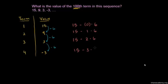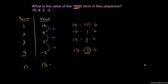The fourth term is 15 minus 3 times 6 — we're subtracting 6 three times. So the pattern is: for the nth term, the multiplier is n minus 1. When n is 4, n minus 1 is 3. When n is 3, n minus 1 is 2. When n is 2, n minus 1 is 1. When n is 1, n minus 1 is 0. So the nth term is 15 minus (n minus 1) times 6.